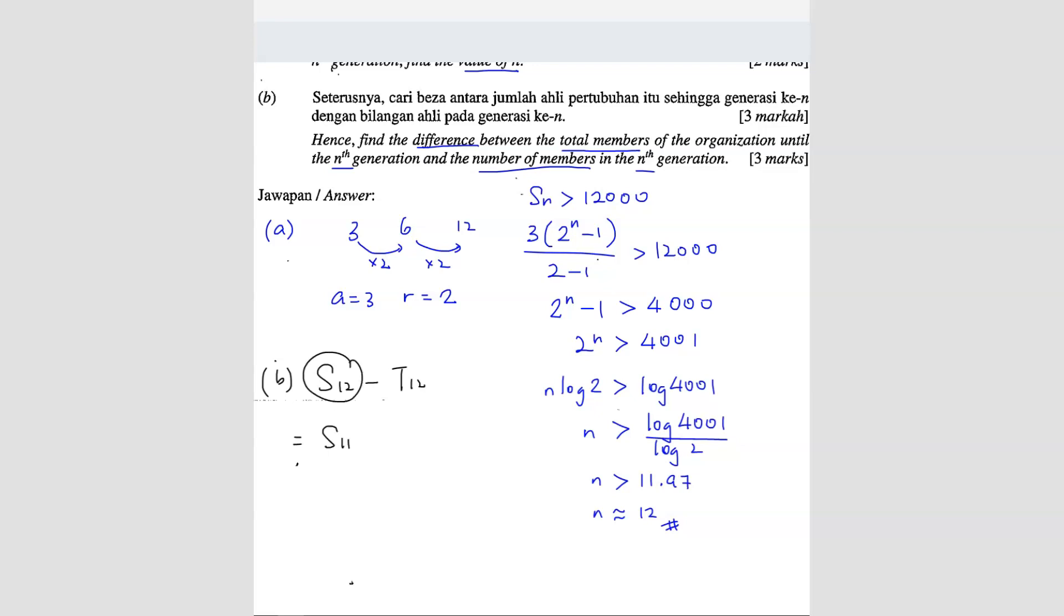Why? Because S12 means what? T1 plus T2 plus T3 plus until T12. I'm going to add up all of them and you're going to minus T12. So what does that mean? So you just have to remove this. So what? Everything in front here, you just count. So this will be T1 until T11. So basically you're finding for S11.